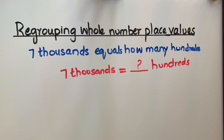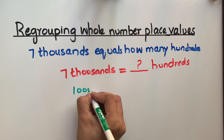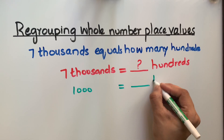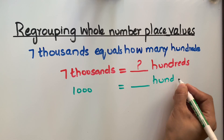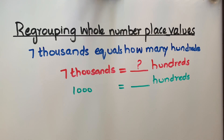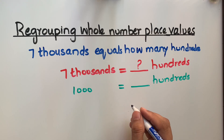There are different ways to find the answer. The first way is to think about one thousand first. One thousand equals how many hundreds? So first we'll think about one thousand equals how many hundreds. Let's count by hundreds until we get to one thousand. I'll use tally marks for this purpose.